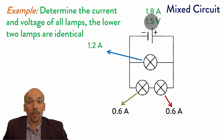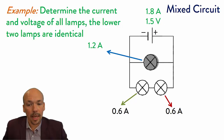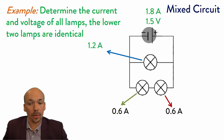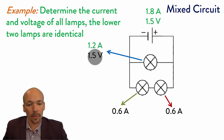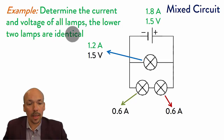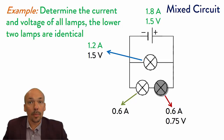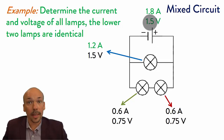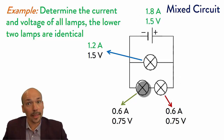Now for voltage. We have 1.5 volts. The amperes split here, and the voltage doesn't split, so the top lamp gets the full 1.5 volts. For the series branch, the two identical lamps divide the 1.5 volts equally — each gets 0.75 volts. And this one gets the other half, 0.75 volts.